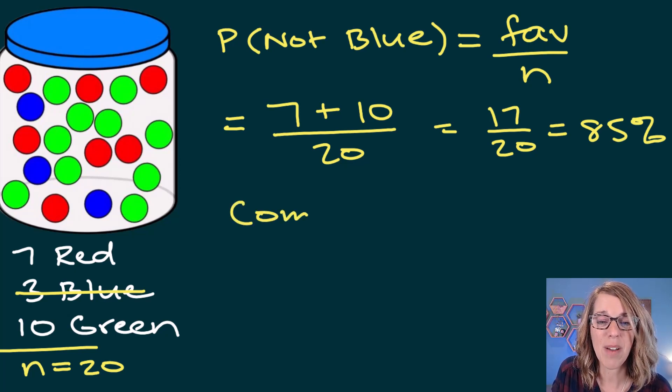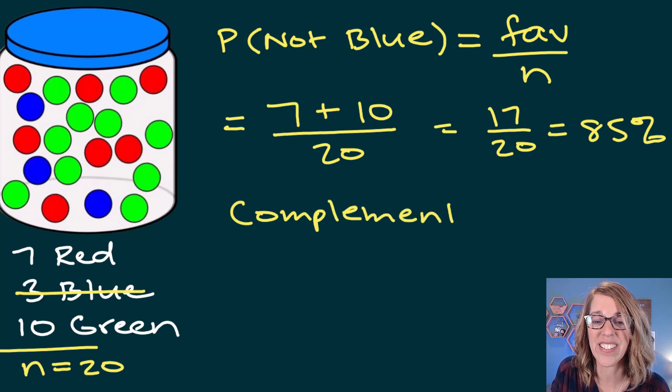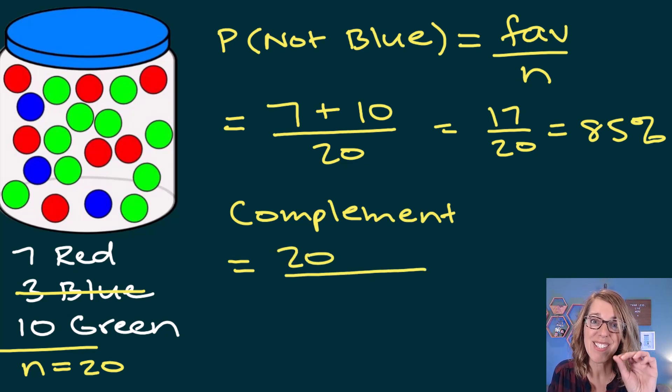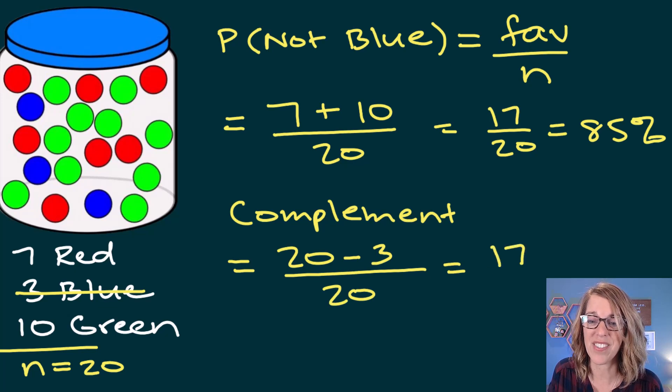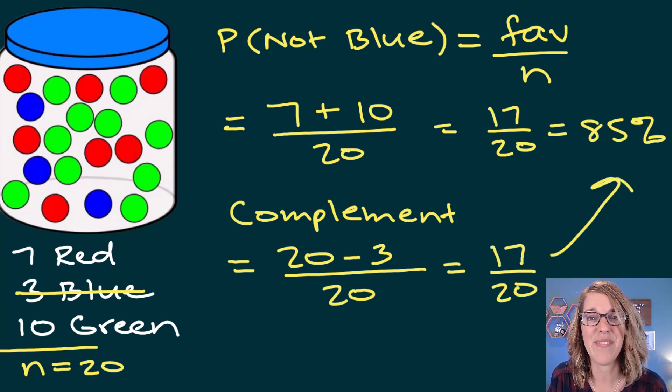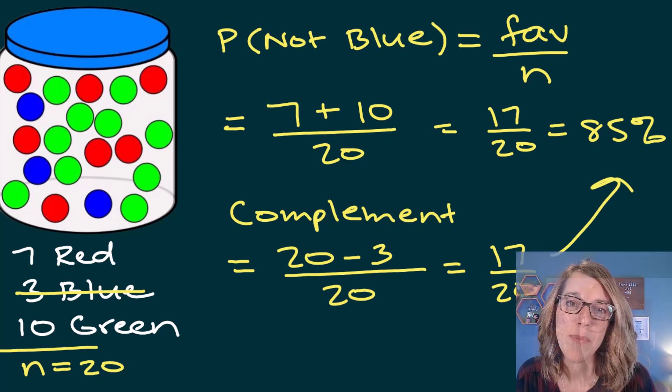Now the other way that you could have done it is using a complement. If I wanted to use a complement, I can subtract what I don't want. I can start with the probability of everything minus the blues that I don't want. So that would be 20 minus 3 over the 20 total, and that gets me right back to 17 out of 20 or 85%.